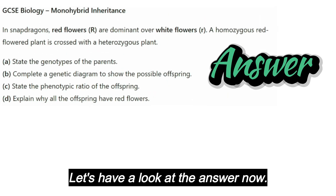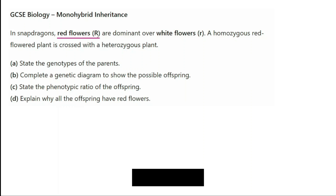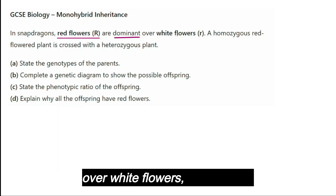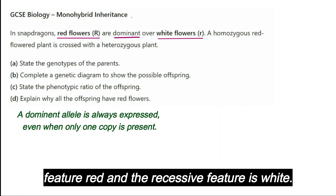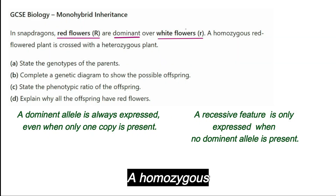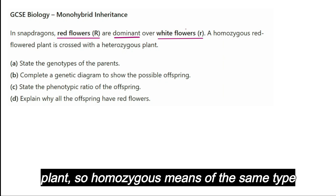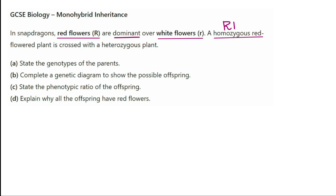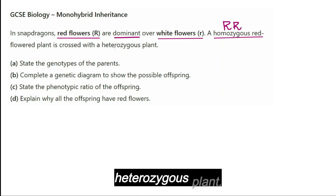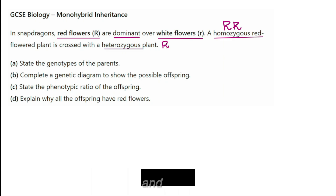Let's have a look at the answer now. In snapdragons, red flowers capital R are dominant over white flowers lowercase r. So red is the dominant feature and white is the recessive feature. A homozygous red flowered plant — homozygous means of the same type, so it's capital R capital R — is crossed with a heterozygous plant, which has capital R and lowercase r.